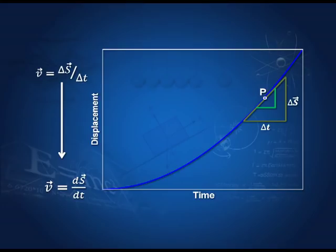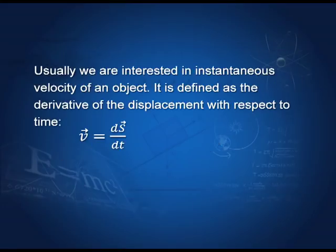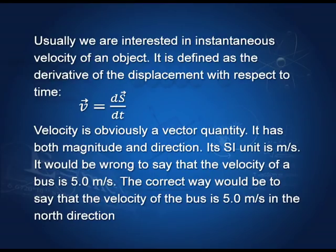About derivatives, if the occasion arises, I will tell you in later lectures. Usually we are interested in instantaneous velocity, and so we get V equal to ds by dt. Velocity is a vector because both sides are vectors — the displacement vector s on one side, and the velocity vector on the other side.